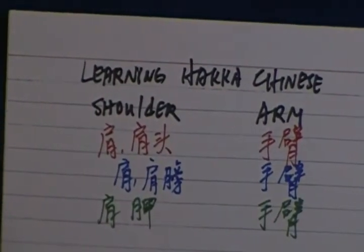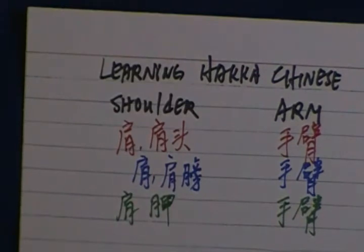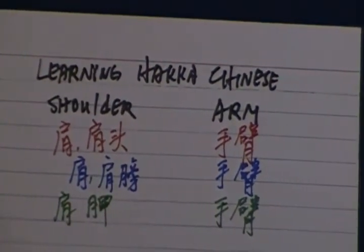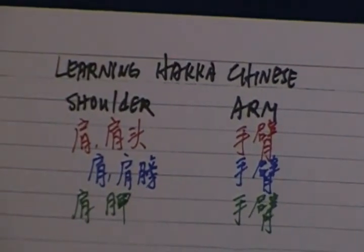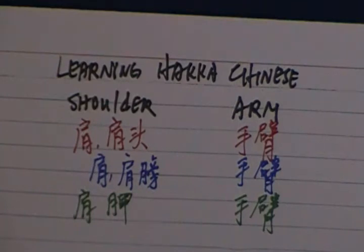Shoulder. Shoulder in Hakka Chinese is Gien, or Gien Tu. In Mandarin is Gien, or Gien Bang. And in Shanghainese dialect is Jika. Gien or Gien Tu in Hakka Chinese, Gien or Gien Bang in Mandarin, Gika in Shanghainese dialect.